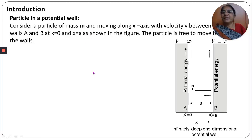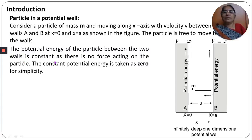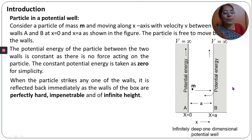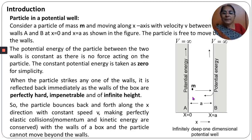The potential energy of the particle between the walls is constant as there is no force acting on it — the particle is freely moving. The constant potential energy is assumed to be zero for simplicity. When the particle strikes any one of the walls, it is reflected back immediately as the walls are perfectly hard, impenetrable, and of infinite height. The particle bounces back and forth along the X direction with constant speed v, making perfect elastic collisions with the walls, so momentum and kinetic energy are conserved.